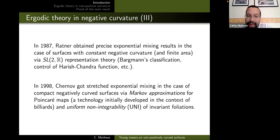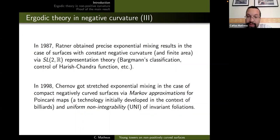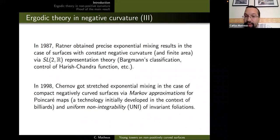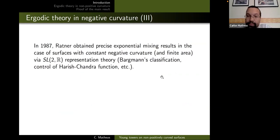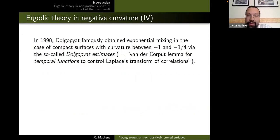Much later, Chernov was developing a method he called Markov approximations, starting with Bunimovich and Sinai for billiards. He wrote a 1998 paper on geodesic flows introducing this technology along with a condition called non-uniform integrability of the foliations to derive stretched exponential mixing for certain geodesic flows in negative curvature. Stretched exponential means e^{-√t} rather than a true exponential rate. Then famously Dolgopyat was able to go from stretched exponential to true exponential using what people today call Dolgopyat estimates.